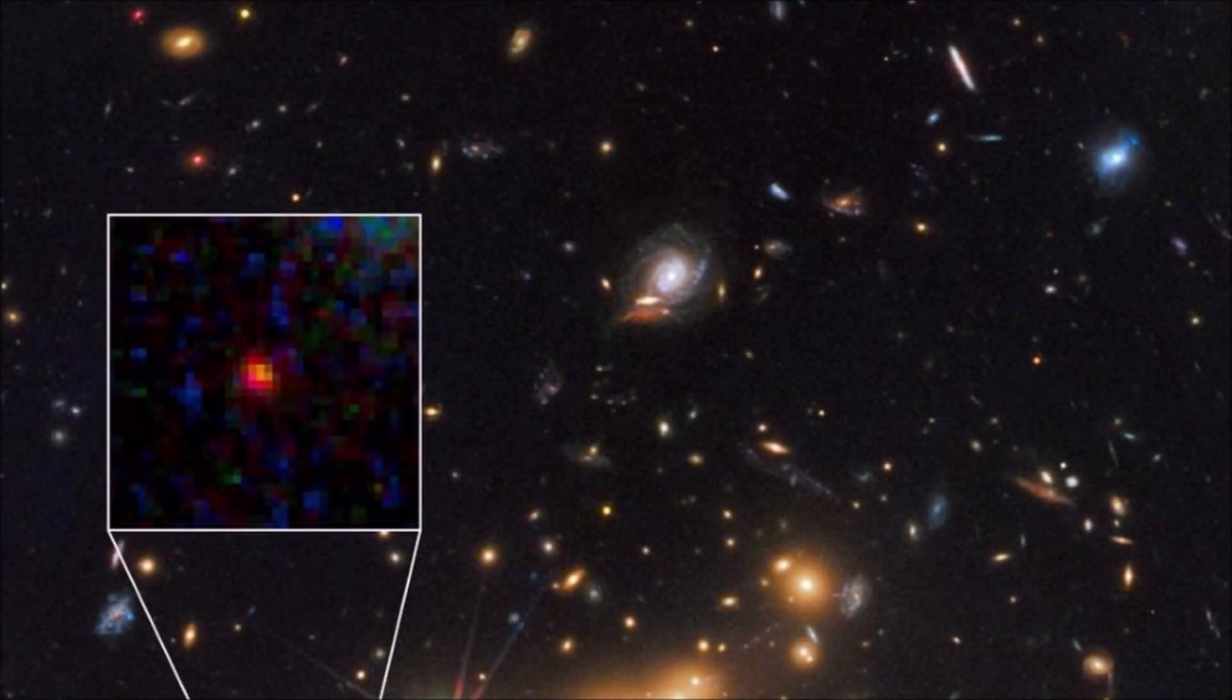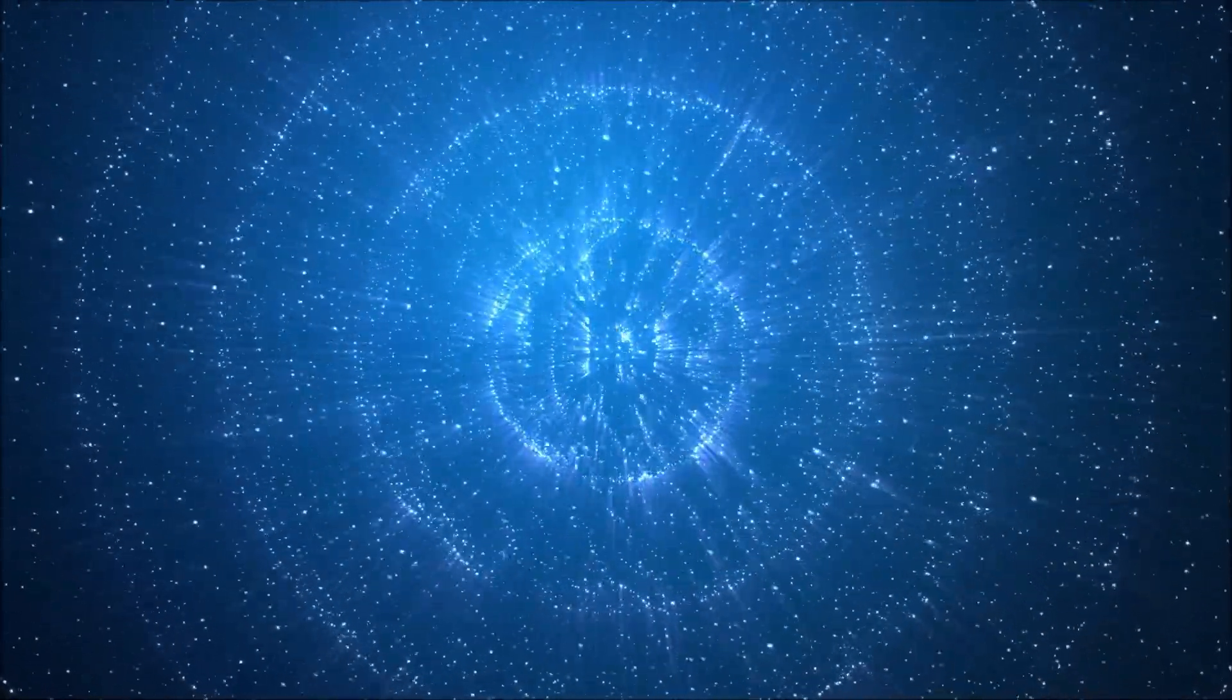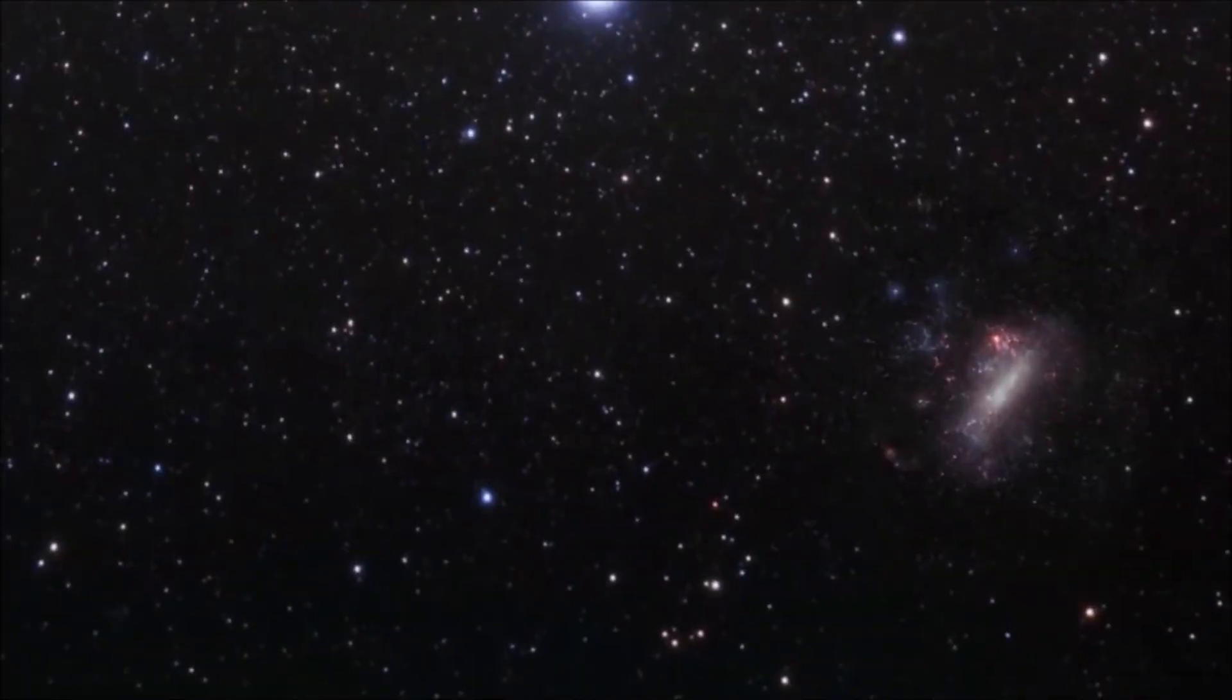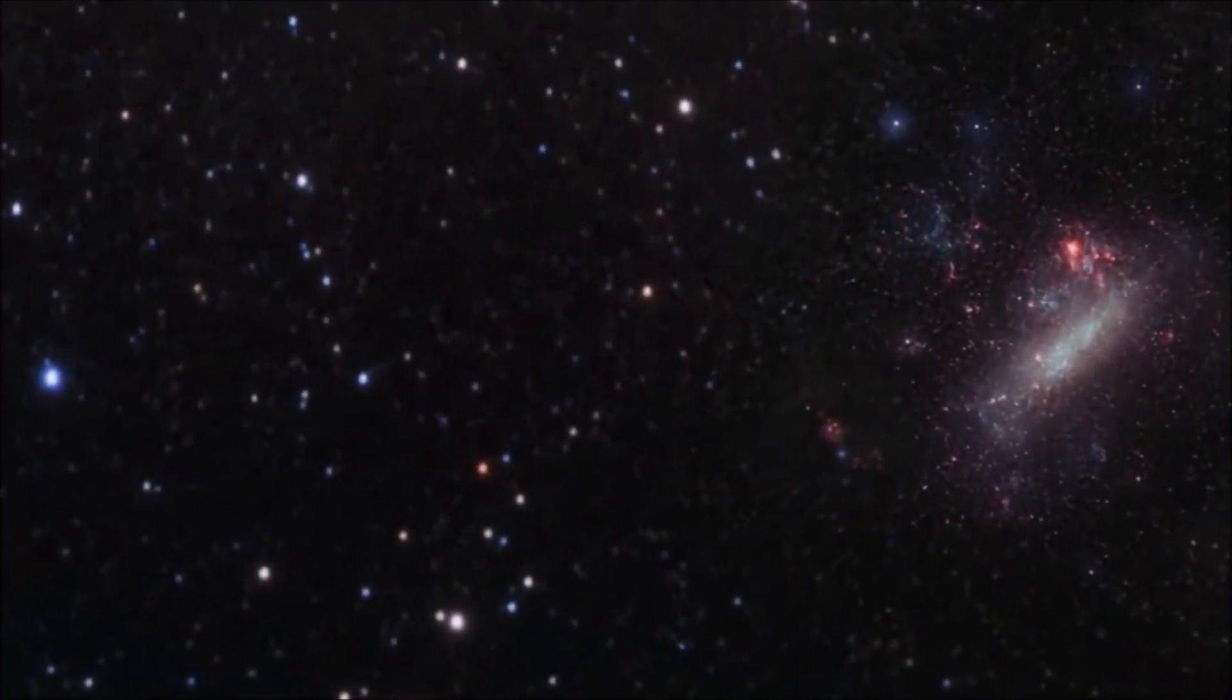This explains why MACS0647JD appears to be so young and small for such a seemingly old galaxy. It formed very soon after the universe's creation, a few hundred million years after the big bang, hypothetically, but the light it is emitting has been on an absolutely enormous intergalactic journey. This observed phenomenon of increased speed of expansion could potentially mean there may be up to 2 trillion galaxies to observe in the future, as opposed to the several hundred billion we used to believe.